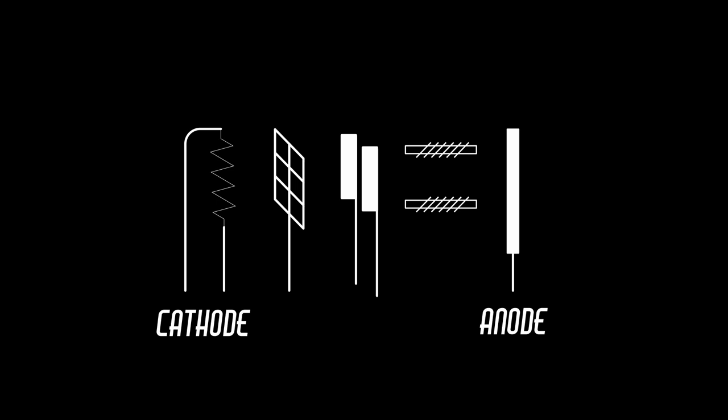Earlier in the series we talked about why thermionic valves need to be under vacuum to operate correctly. It boils down to getting gas molecules out of the way so electrons can travel in a straight line between the active elements.